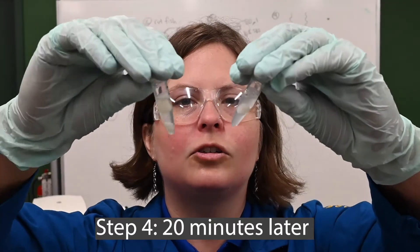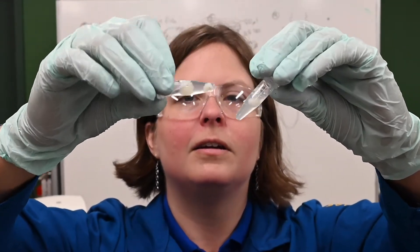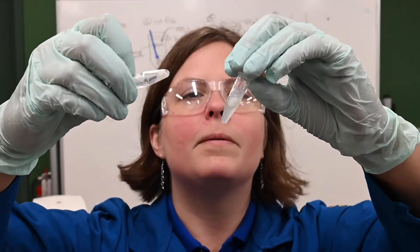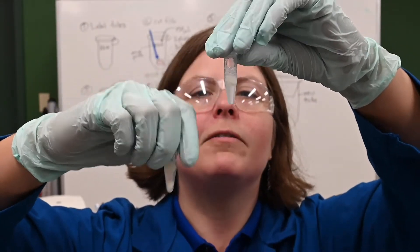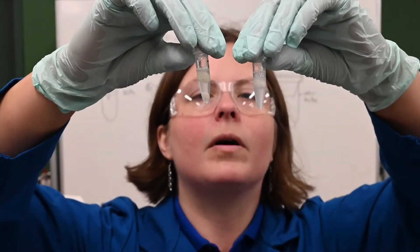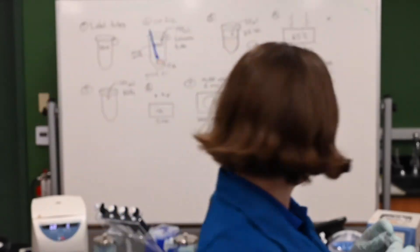There's definitely chunks. So that is fish cells, fish lipids, fish proteins, and this liquidy part, that's going to have the DNA. That's what we want. So let's keep going.